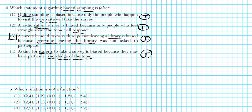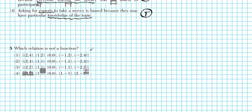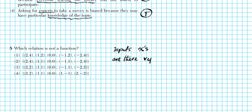Let's move on to number 5. It says: which relation is not a function? The definition of a function is a rule that assigns every input to exactly one output. The focus is on the input — every input has to be assigned to exactly one output. Your inputs are your x-values. Whenever you're given a relation in ordered pair notation, focus on the x's and ask yourself: are there any repetitions?